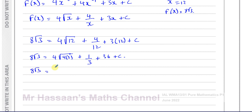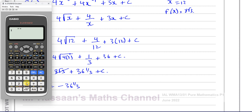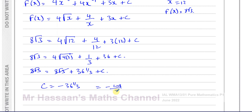So 8 root 3 equals 4 times 2 root 3 plus 1/3 plus 36 plus C, which is 8 root 3 plus 36 and 1/3 plus C. The 8 root 3 terms cancel from both sides, leaving C equals negative 36 and 1/3, which as an improper fraction is negative 109/3.